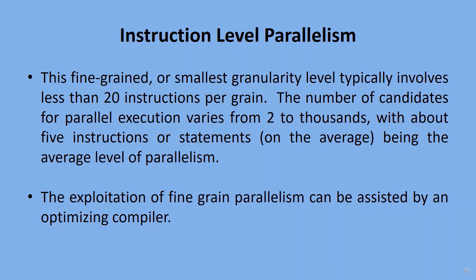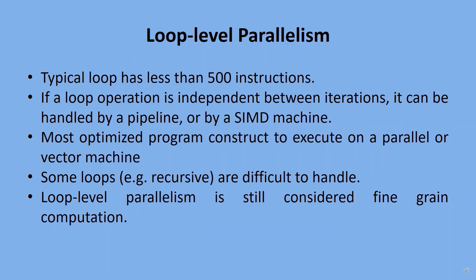Loop Level Parallelism: a loop usually contains less than 500 instructions. If there is no dependence between loop operations across iterations, it can be handled by a pipeline or SIMD machine. Loop Level Parallelism is often the most optimized program construct to execute on a parallel or vector computer. Some loops, such as recursive loops, are difficult to parallelize. Loop Level Parallelism is also considered Fine Grain Computation.